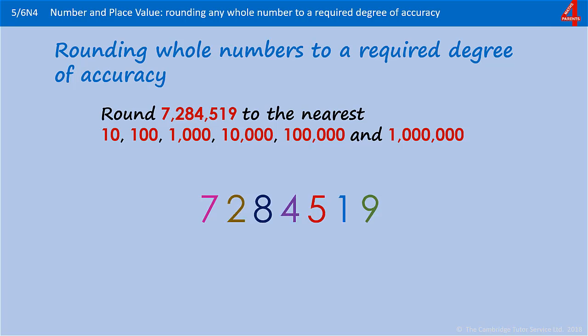Back to the original number one last time, and this time you're going to round to the nearest million. Pause the video, have a go. We have seven million. In the hundreds thousands column we have two, which means we're going to round down. That seven million will stay the same.